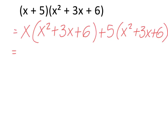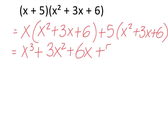So x times x squared is x cubed, then positive x times 3x is 3x squared, then x times 6 is 6x. Moving to the second part: positive 5 times x squared is plus 5x squared, then 5 times 3x is 15x, and finally 5 times 6 is 30.